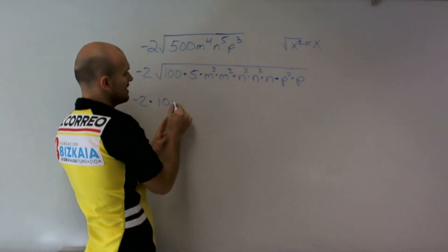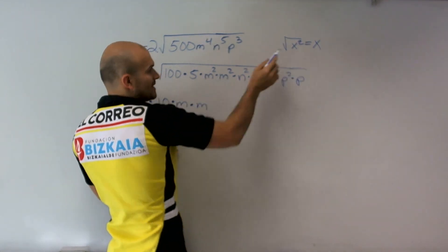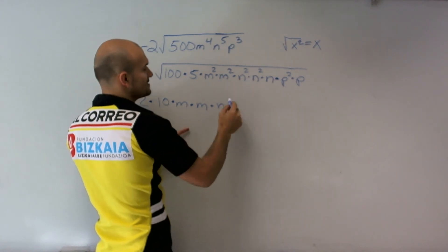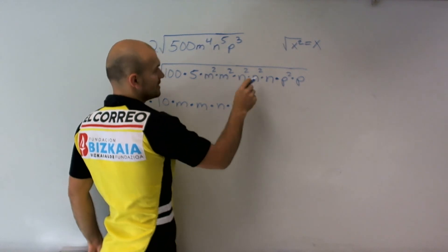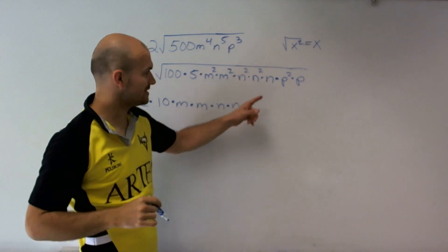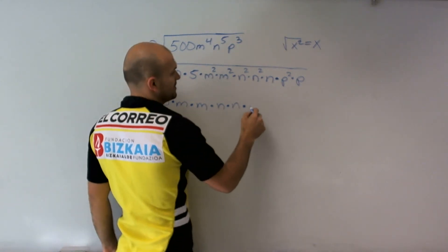The square root of m squared is m, the square root of m squared is m. The square root of n squared is n. This n is going to have to remain under the radical because you can't take the square root of n.